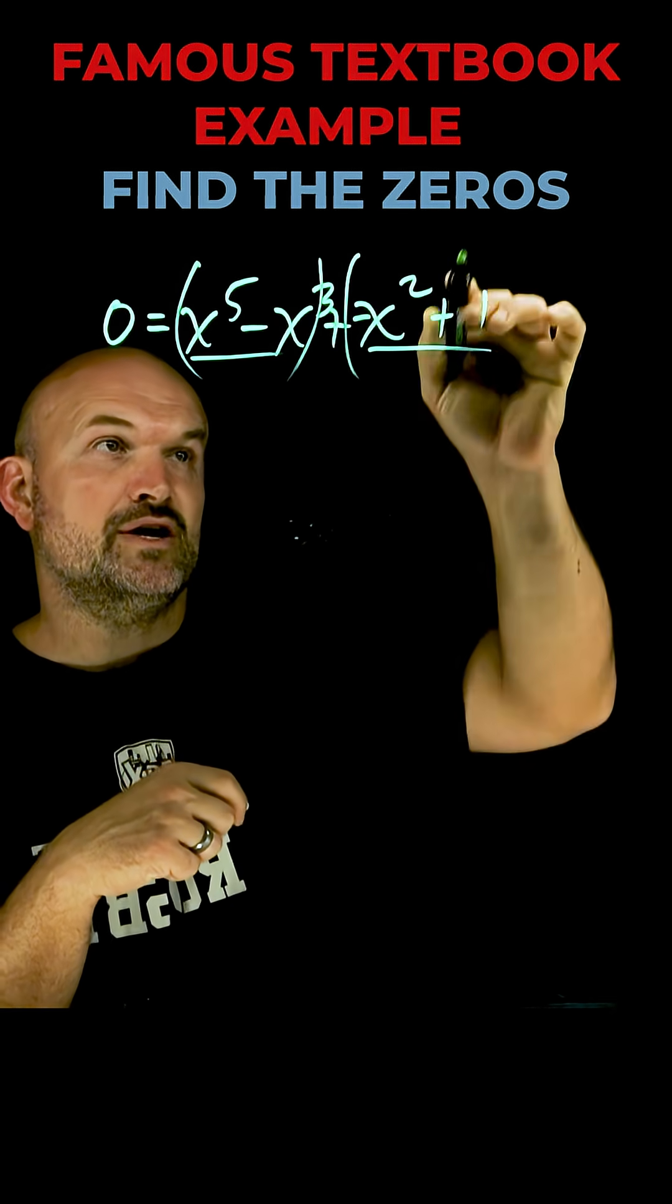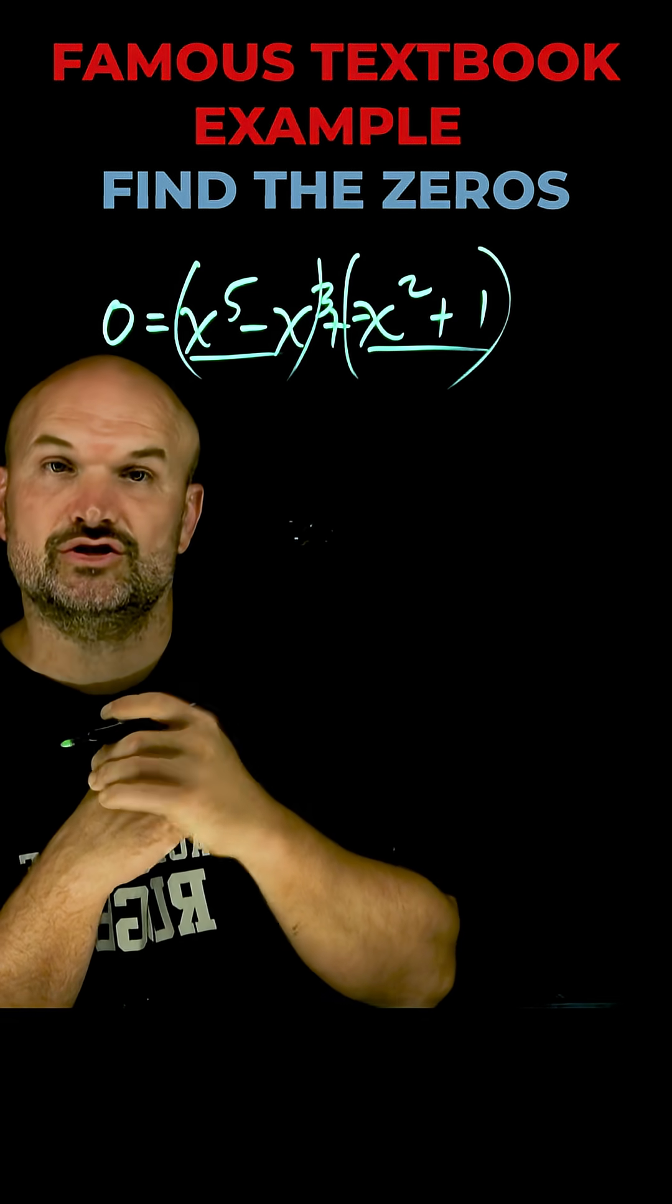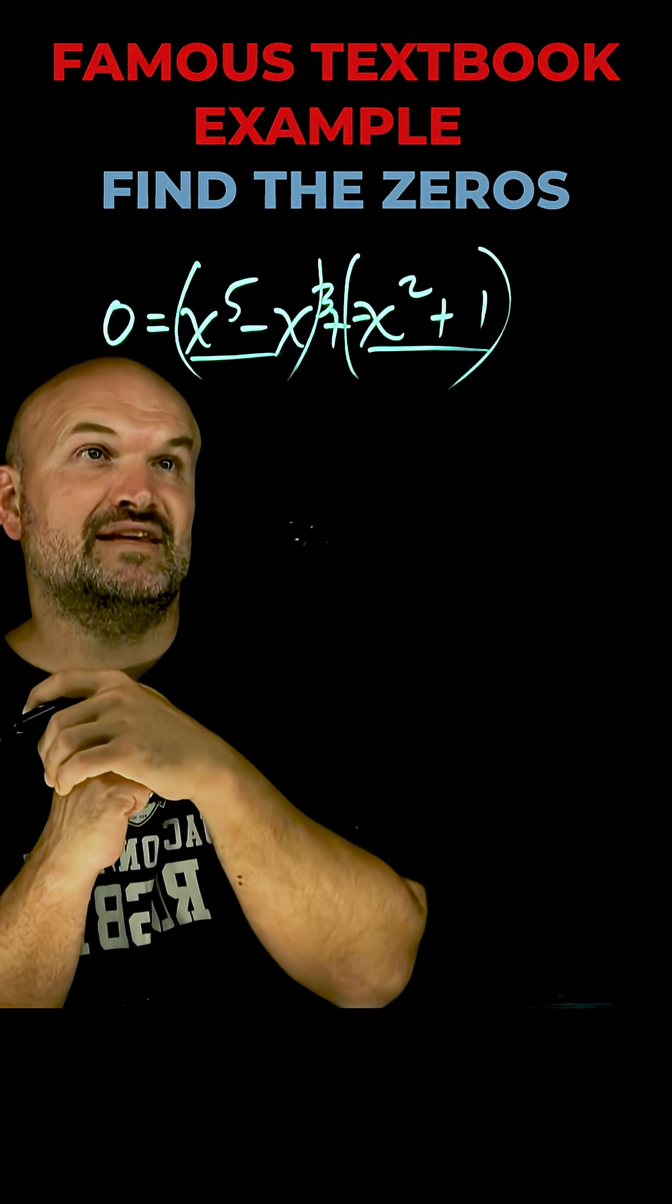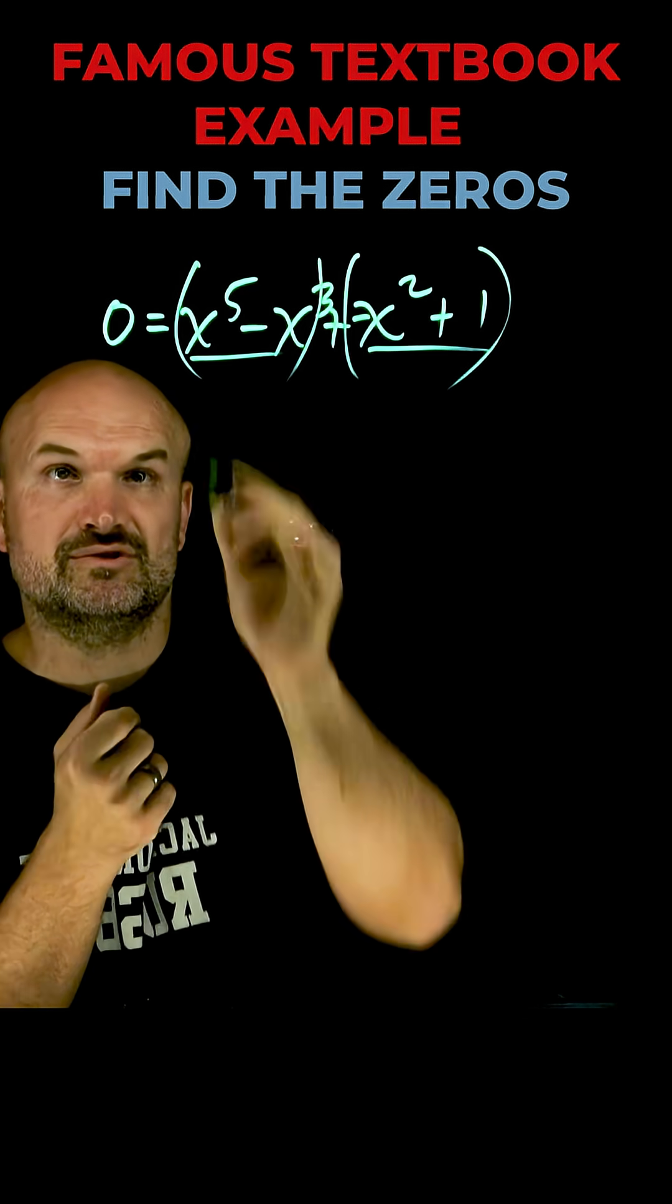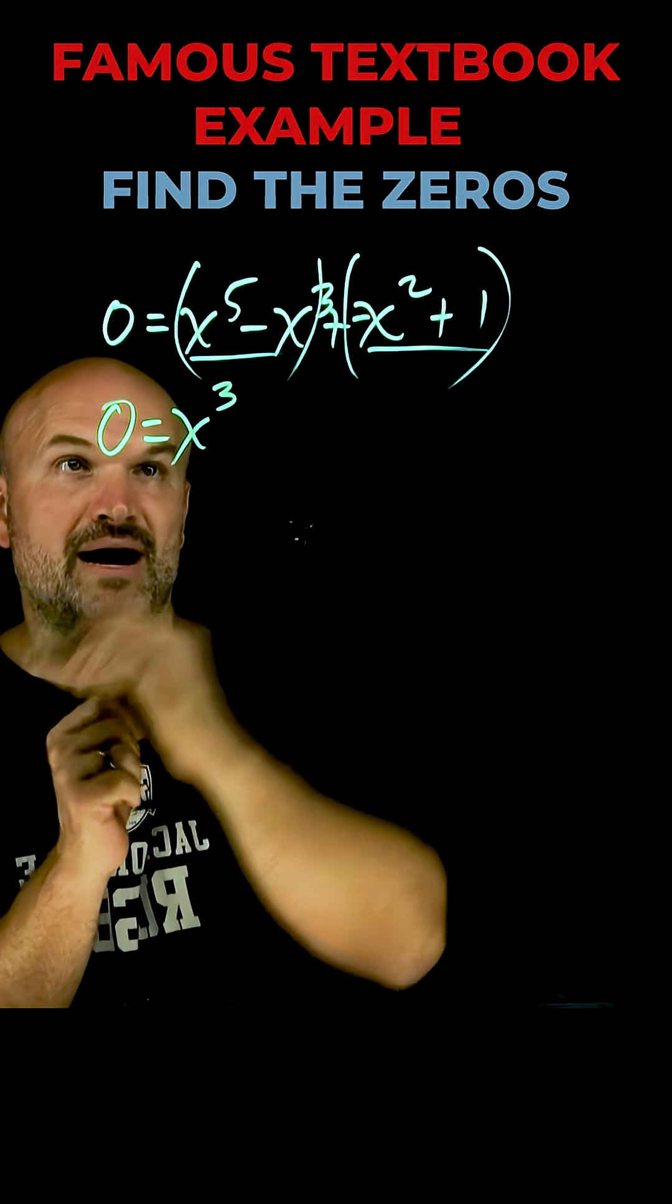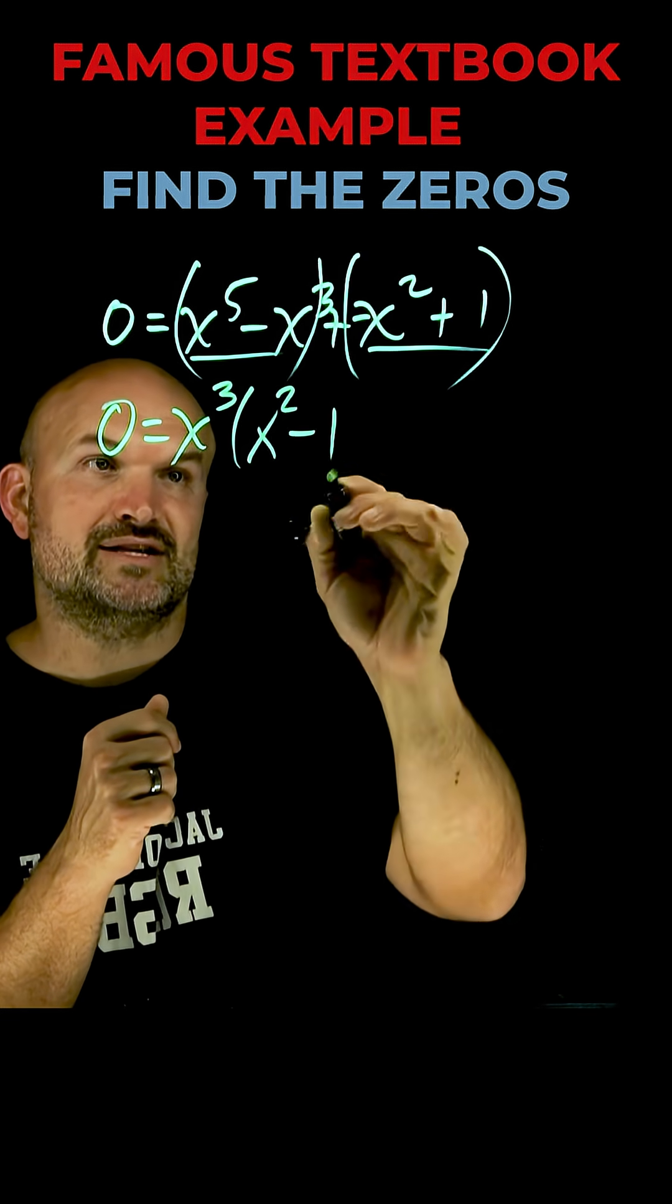Then I group my first two terms, group my last two terms, and now factor out the GCF from each of them. Between the x to the fifth minus x cubed, the common factor is going to be x to the third. So I can factor out x to the third power, and that's going to leave me with an x squared minus one.